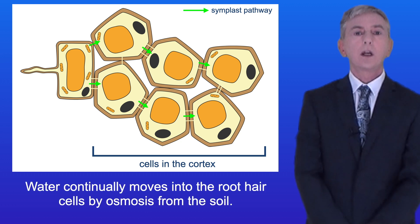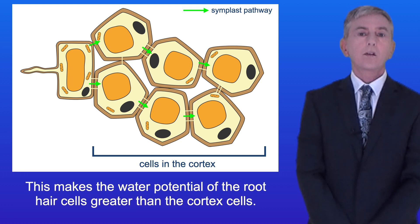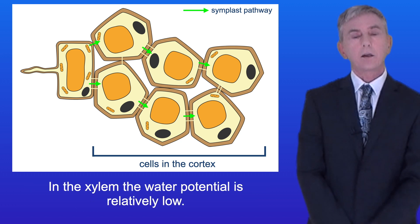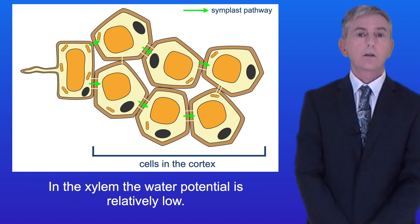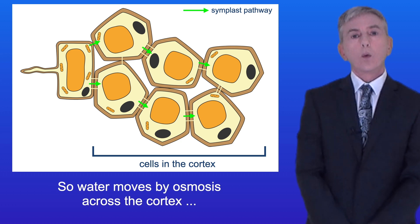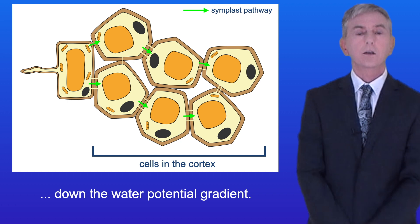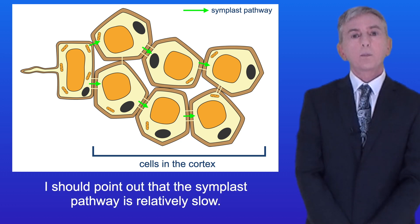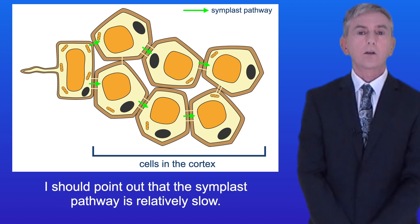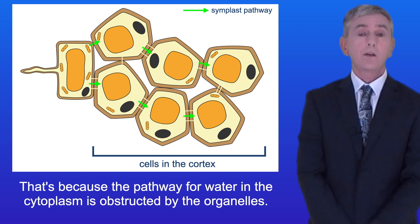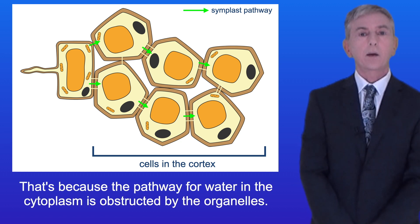Water continually moves into the root hair cells by osmosis from the soil, making the water potential of the root hair cells greater than the cortex cells. In the xylem, the water potential is relatively low, so water moves by osmosis across the cortex, down the water potential gradient. The Simplast pathway is relatively slow because the pathway for water in the cytoplasm is obstructed by the organelles.